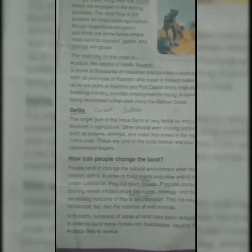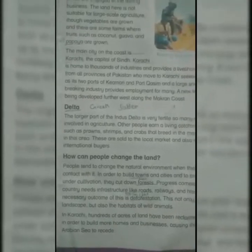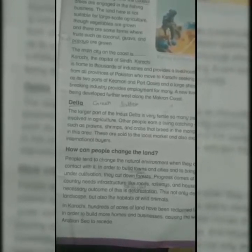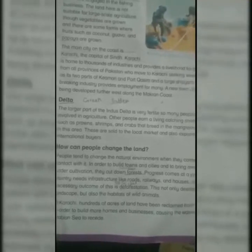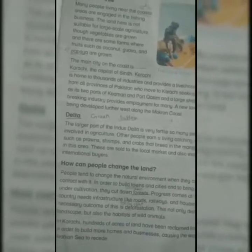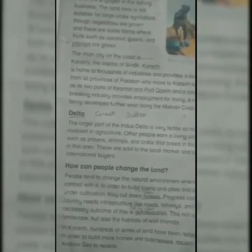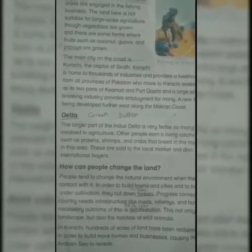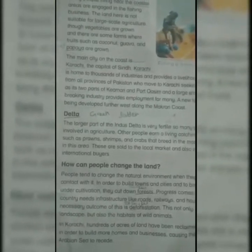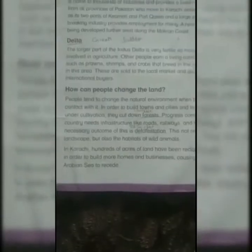Our next region is Delta. A delta is a wetland area that forms as river waters empty into a larger body of water. Deltas get their name from a Greek letter of the alphabet, and there is evidence that deltas can exist on other planets. The natural resources of a delta are water and fish, and people are engaged in agriculture and fishing.